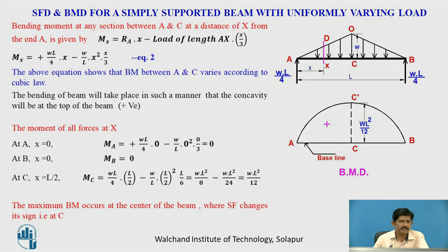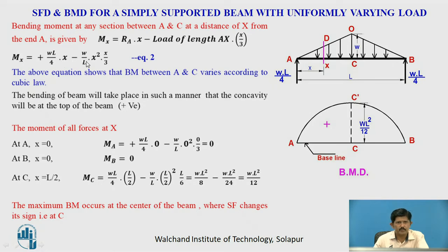Now we will find out the bending moment. Considering the section at x, the bending moment at any section between A and C at a distance of x from end A is given by: Mx equals Ra into x. This is the clockwise moment, positive, and this load will be anti-clockwise. So it is minus load on length AX into x by 3, because x by 3 is the centroid of this triangular load. So Mx equals WL by 4 into x minus W by L into x square into x by 3. The bending moment will have concavity at the top, so the bending moment is positive.